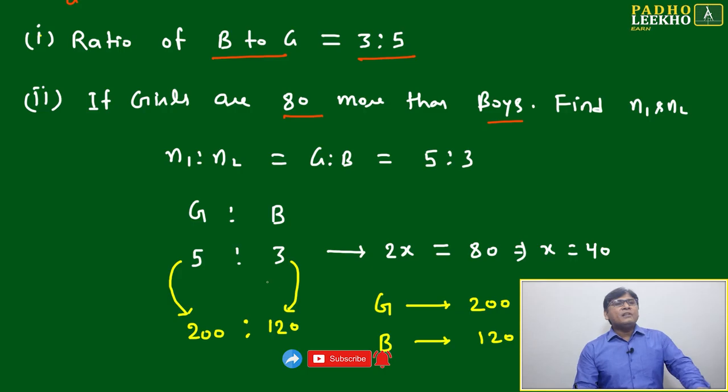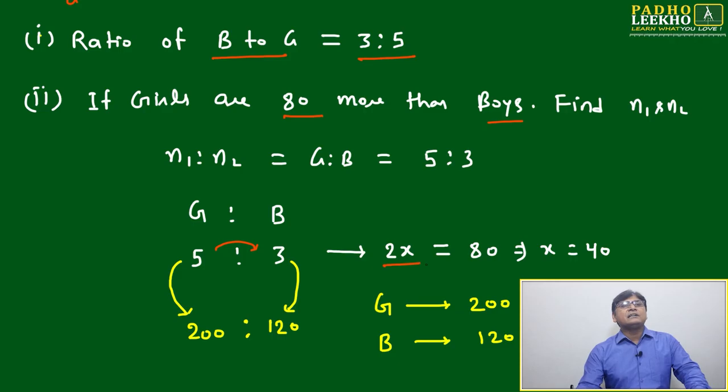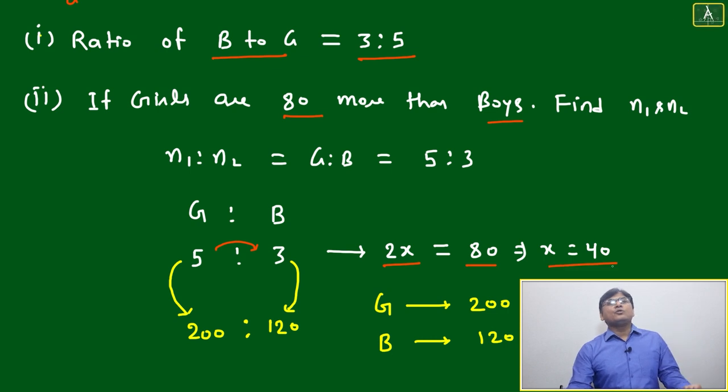Here we will be able to find it. Since it's 80 more, we take the difference: 5 minus 3, which gives us 2 times x. Here x is just the coefficient of the ratio, nothing else. So 2x equals 80, then x equals 40. This means the multiplication factor is 40, so both ratios you...